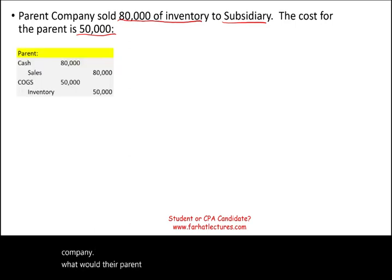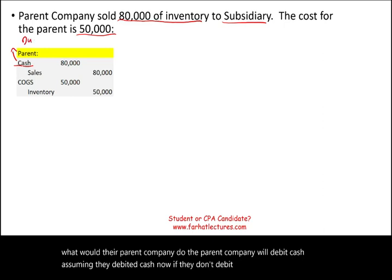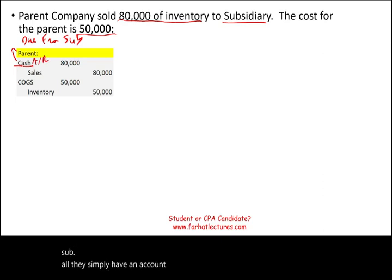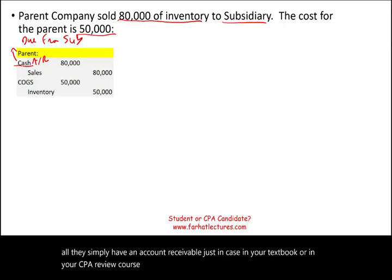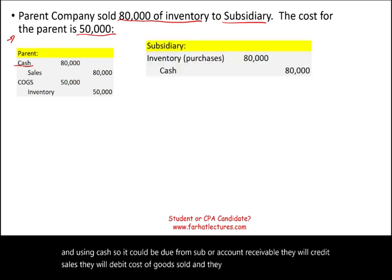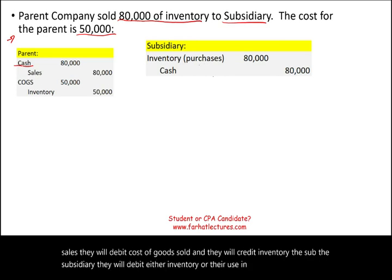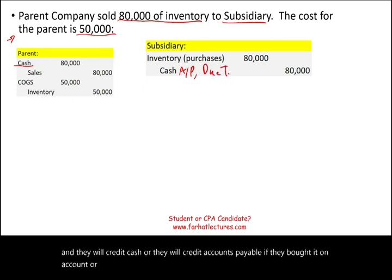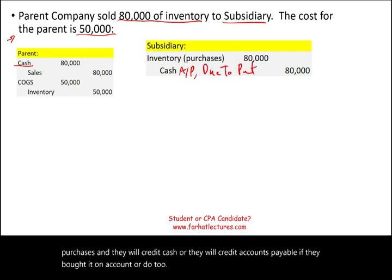The parent company will debit cash — or if not cash, they will debit something called 'due from sub,' which is a receivable, or simply accounts receivable. They will credit sales, debit cost of goods sold, and credit inventory. The subsidiary will debit inventory (or purchases, if using periodic), and credit cash, accounts payable, or 'due to parent.' I'll keep it simple and use cash.